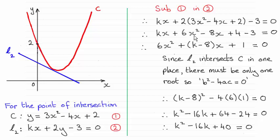So what I need to do is group up my terms, get it in the form AX squared plus BX plus C equals zero.